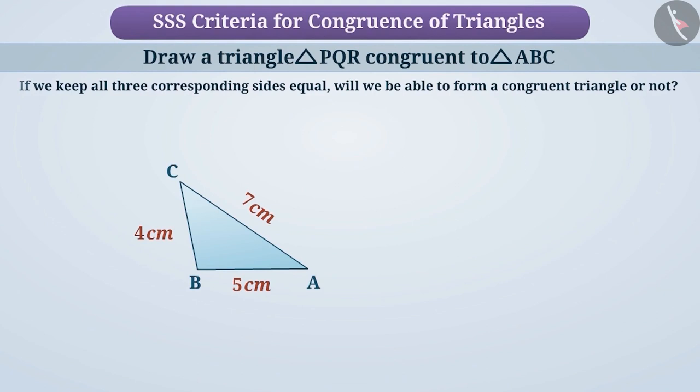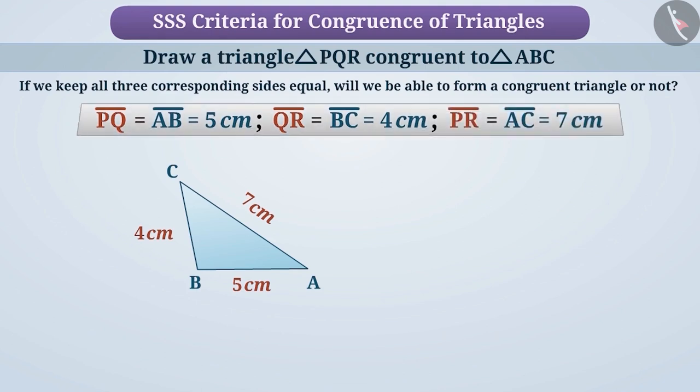Now let's verify if we keep three corresponding sides equal, will we get triangle PQR congruent to triangle ABC or not? To draw triangle PQR, we have PQ equals AB equals 5 cm, QR equals BC equals 4 cm, and PR equals AC equals 7 cm.